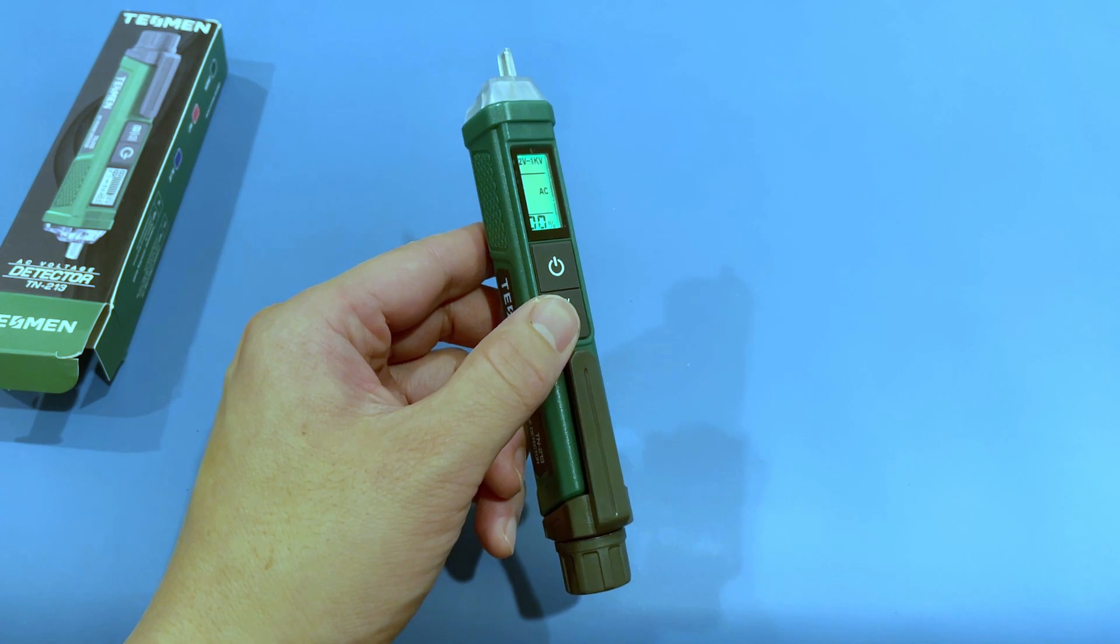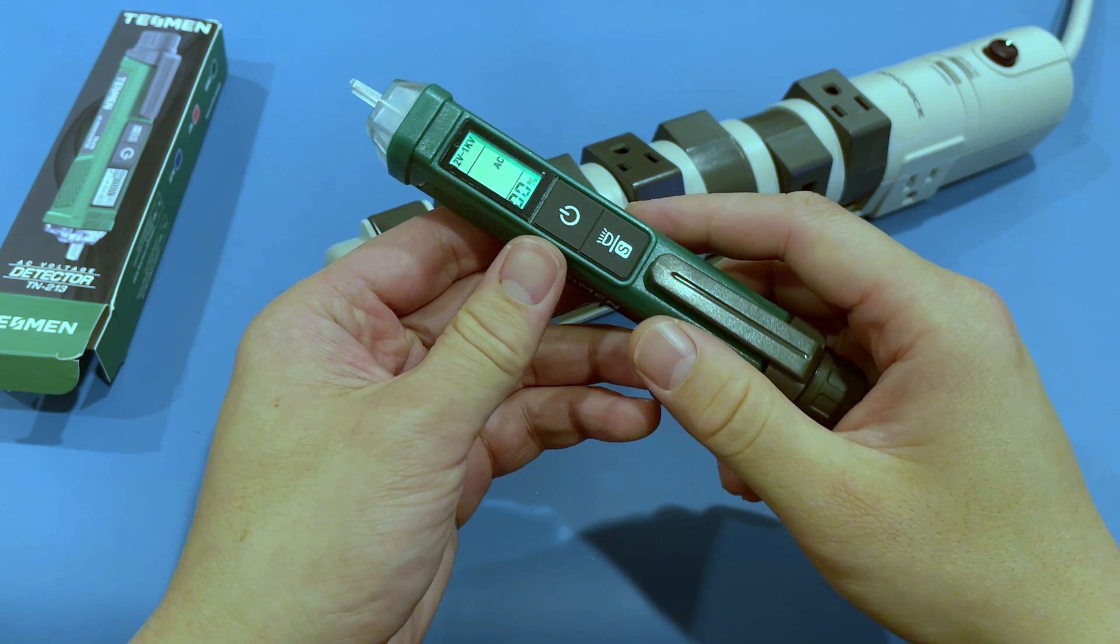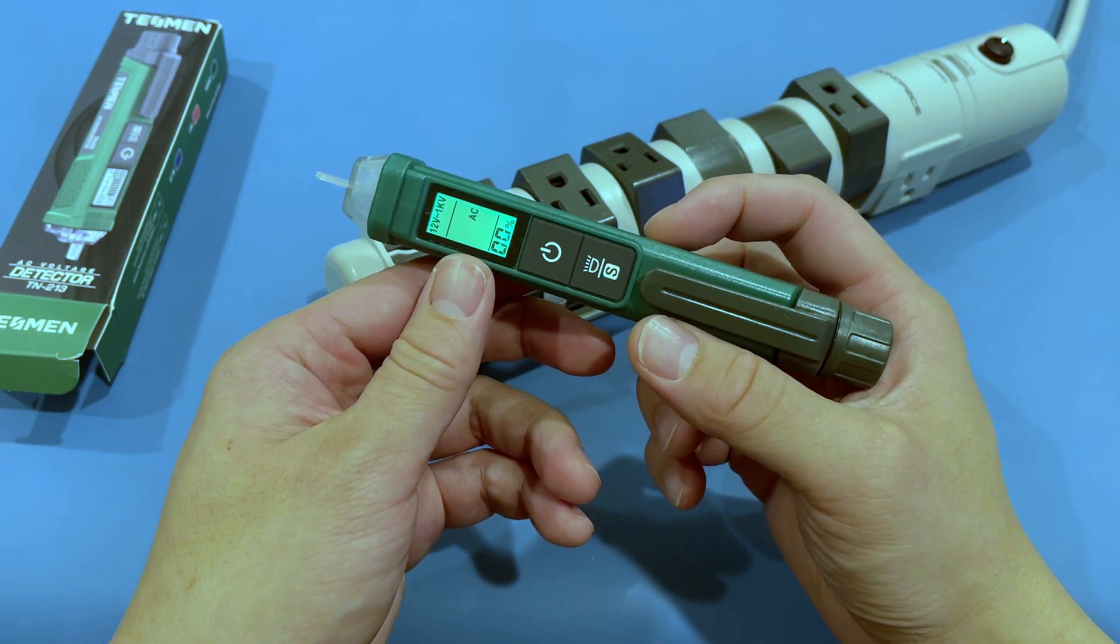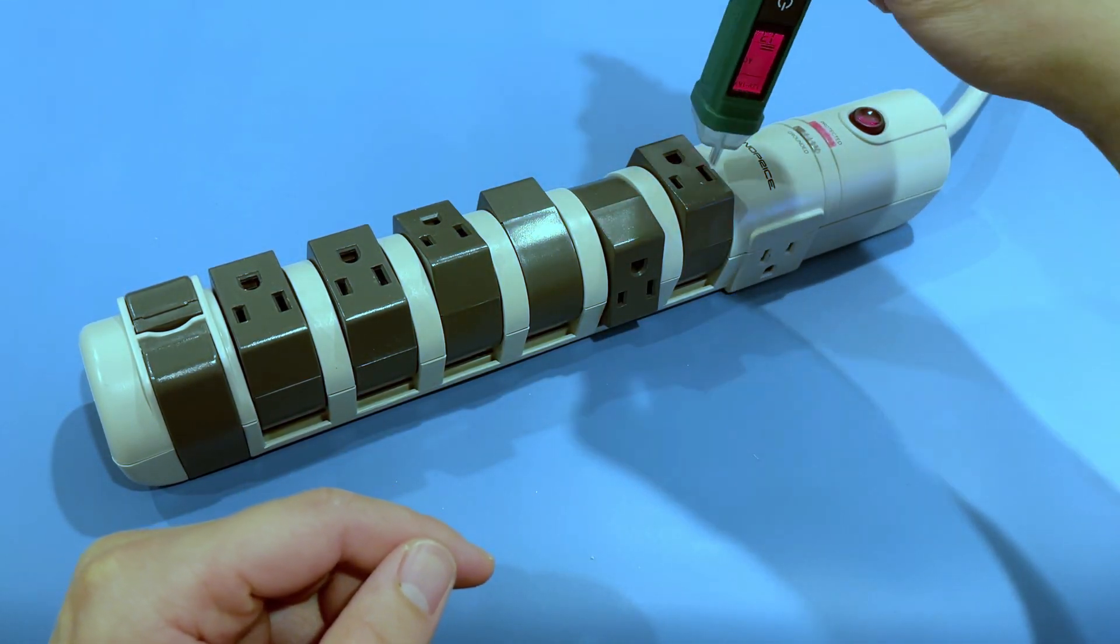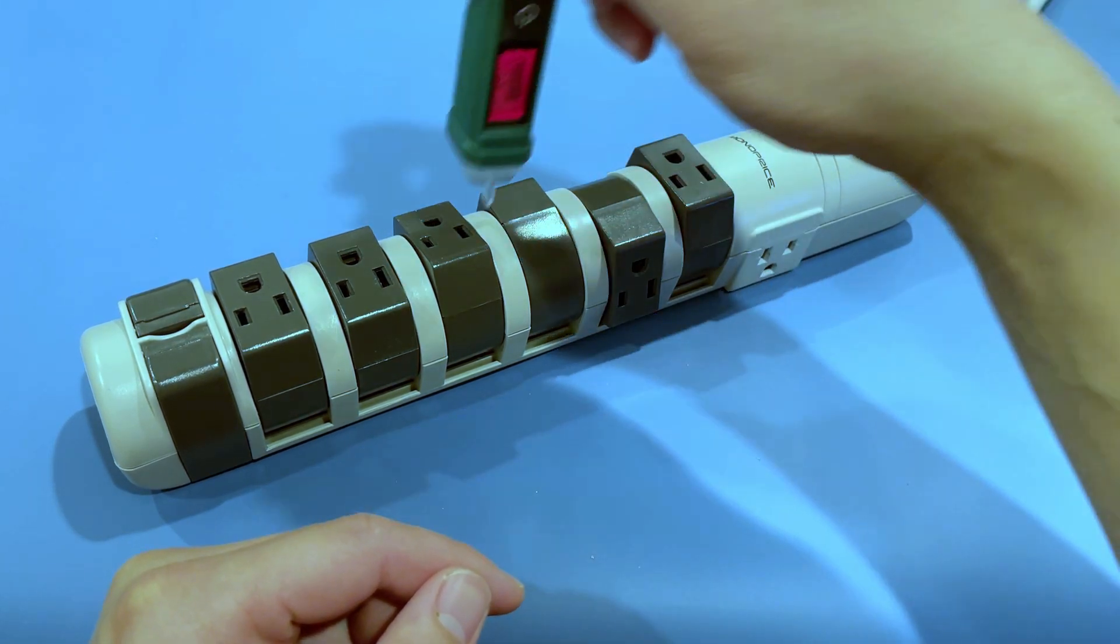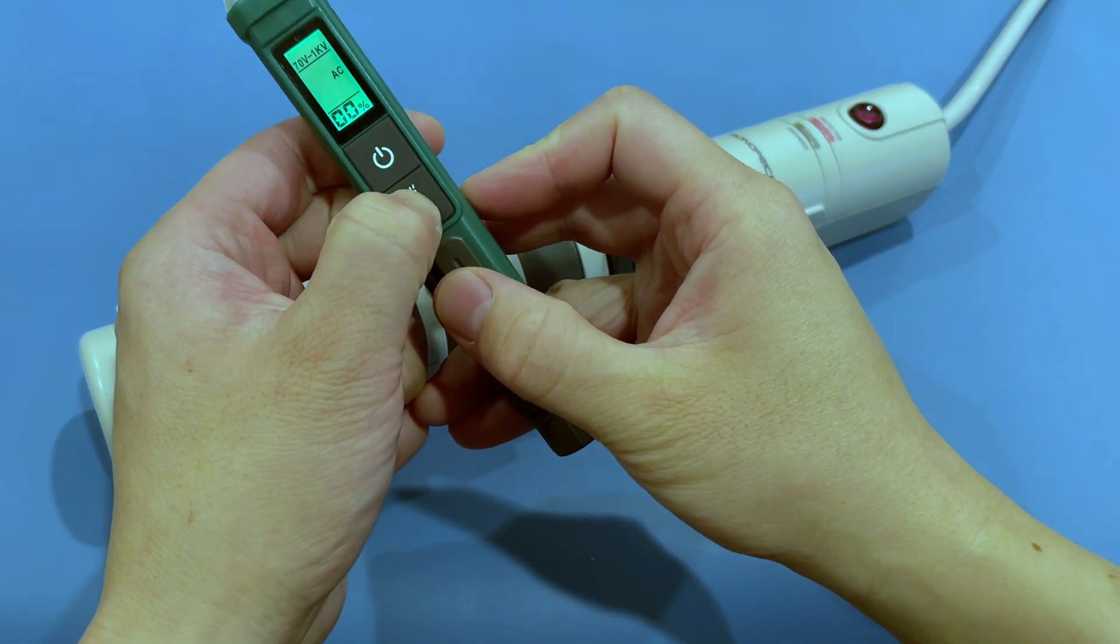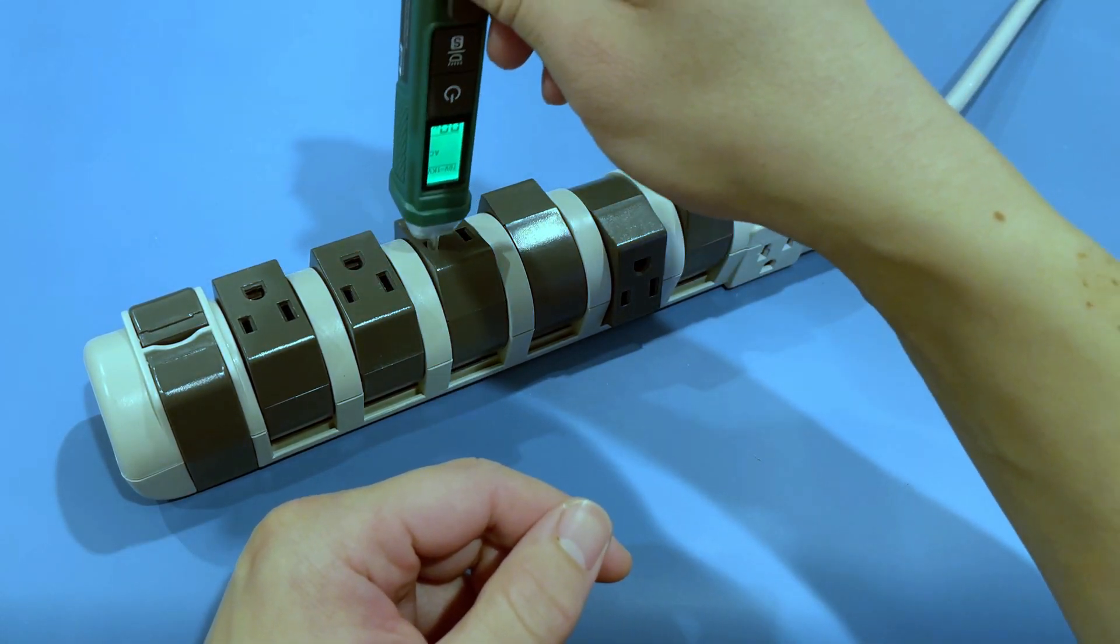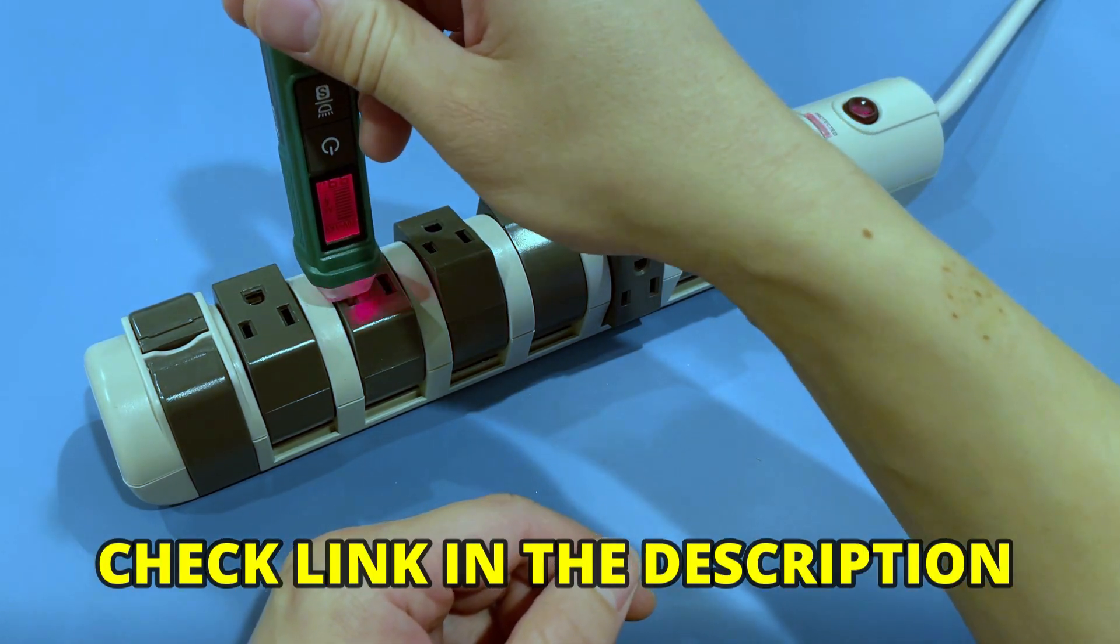Now we will test the voltage tester on an extension cord. We will simulate a direct contact test and a non-contact voltage measurement. Let's see how this tool works. Both voltage testing methods, with contact and without contact, work excellently. If you want to purchase this tool, you can find it at the link provided in the video description.